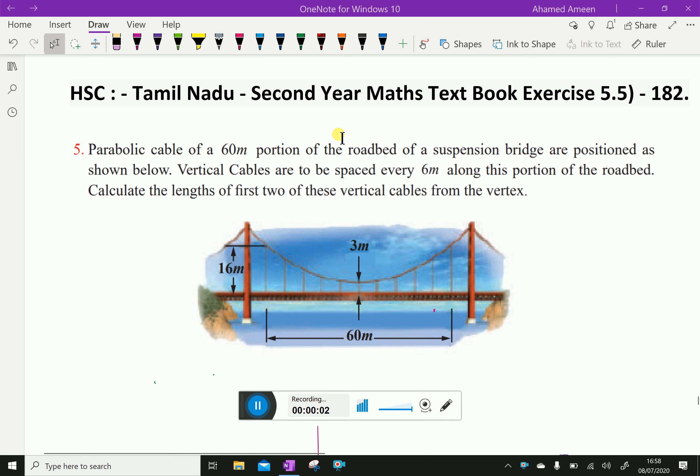Welcome to AminAcademy.com. Let us do Tamil Nadu Higher Secondary Second Year Maths Textbook Exercise 5.5 Question 5. A parabolic cable of 60-meter portion of the roadbed of a suspension bridge are positioned as shown below. Vertical cables are to be spaced every 6 meters along this portion of the roadbed. Calculate the length of first two of these vertical cables from the vertex.